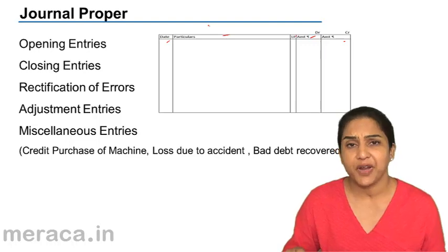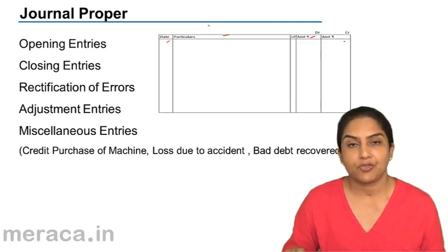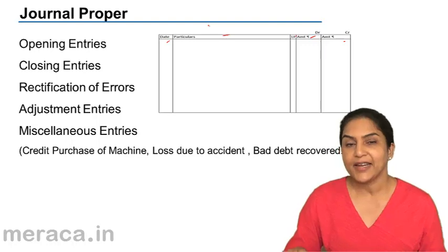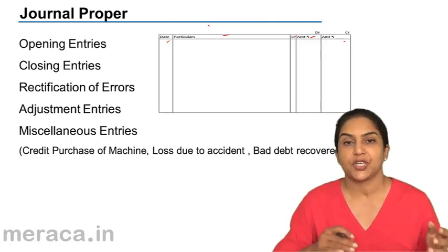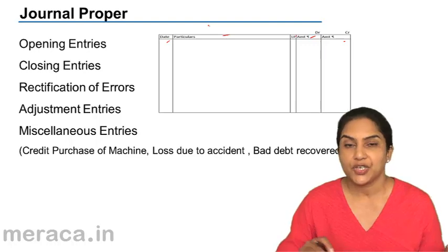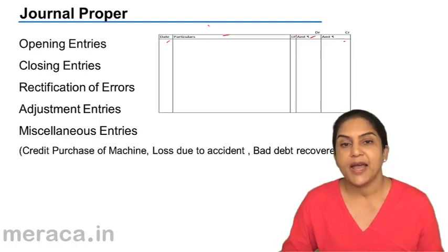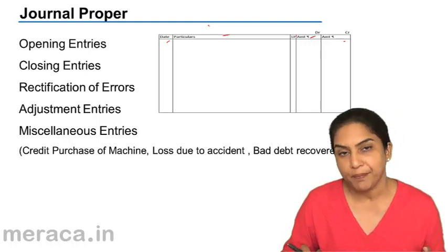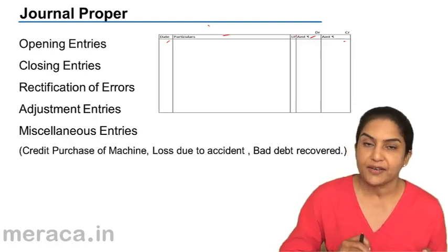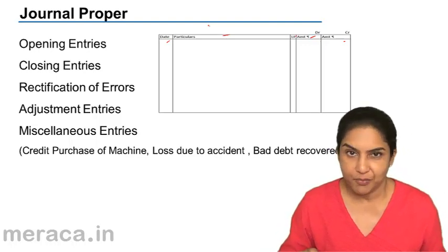What kind of entries are passed through the journal proper? Like I said, entries which cannot be entered in the cash book, purchase day book, sales day book, purchase return, sales return, bills receivable and bills payable. Sometimes bills receivable and bills payable books are not maintained, and therefore those entries would be recorded in the journal proper.